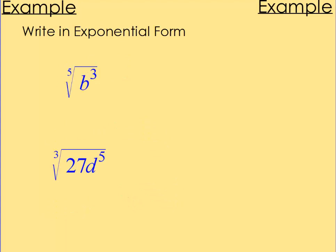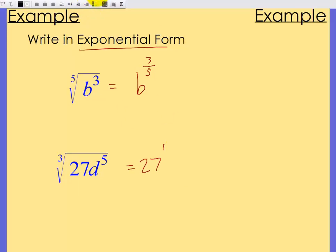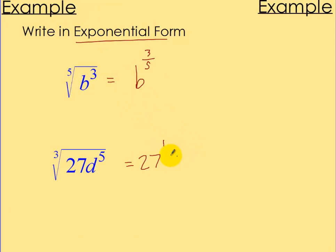Alright, last one. Pause the video. We're going to write in exponential form now. So convert to an exponent. That will be b to the 3 over 5. It's the fifth root. And the next one is going to be 27. And notice this 5 is only for the d. So it's going to be 27 to the 1 third power. Actually, I can rewrite that differently. Let's go 27. So there's a few different ways of writing this. Actually, it's going to be 27. I'm going to split that up. 27 to the 1 third power times d to the 5 thirds power. And I can say 27 to the 1 third power. You might have done that a few times. You know that's 3. So we can write that as 3d to the 5 thirds power. Either way works. That's it.